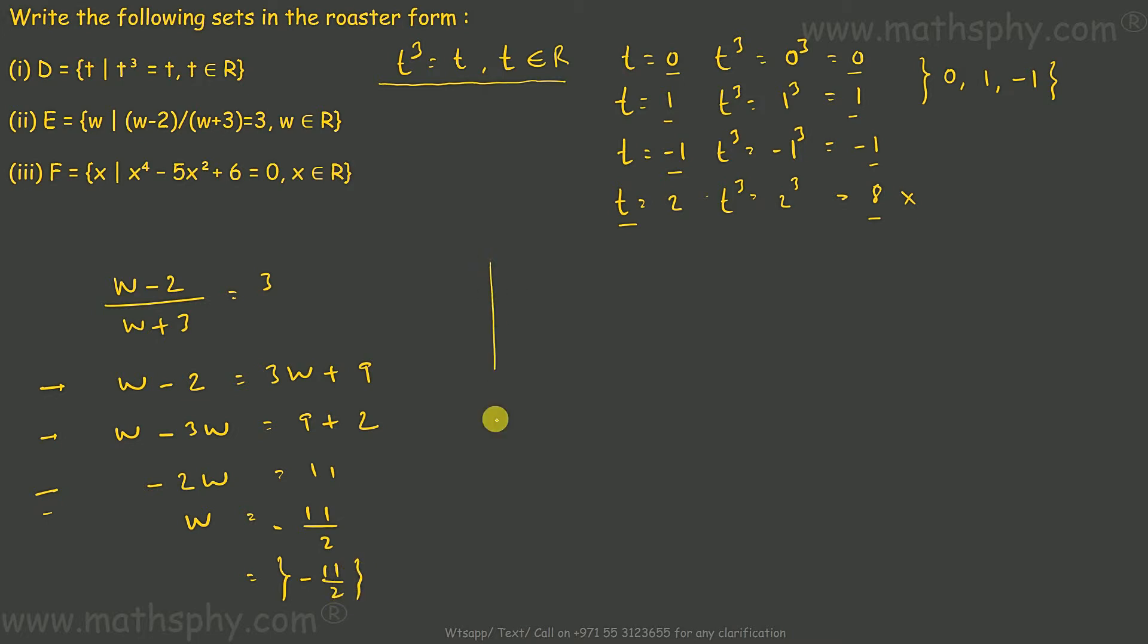The third one here says we have a set called F where elements are X and they are real numbers in the format of x⁴ - 5x² + 6 = 0.